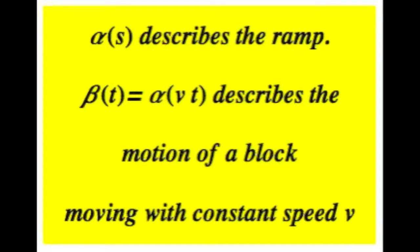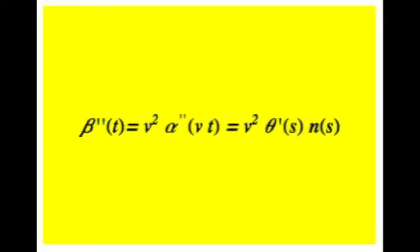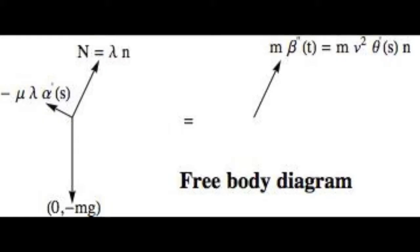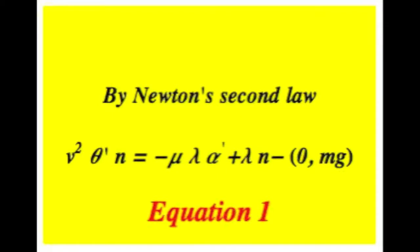Let us assume that beta of t describes the motion of the block. A direct computation shows that the acceleration of the block satisfies this equation. Using Newton's second law and taking a look at the free body diagram, we conclude that this equation must hold true.